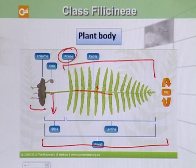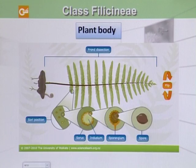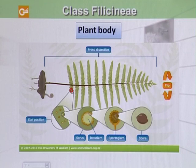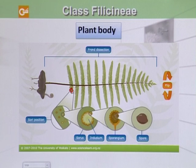If we flip the figure around, we will see the underside of it. On the underside, there are groups of sporangia. A single group of sporangia is called a sorus. When we examine a sorus, it contains many sporangia within it.